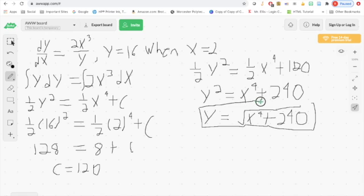We have our final solution for y. Y will be the square root of x to the fourth, plus 240. You can see how we got to that using these steps.